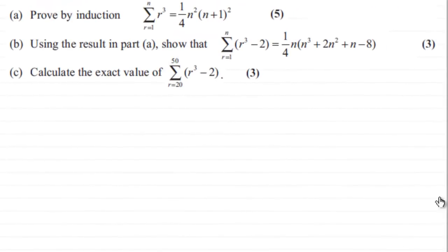Hi. Now for this next part, part B, we've got to use the result in part A to show that sigma of r cubed minus 2 going from r equals 1 to n is equal to a quarter n all multiplied by n cubed plus 2n squared plus n minus 8.